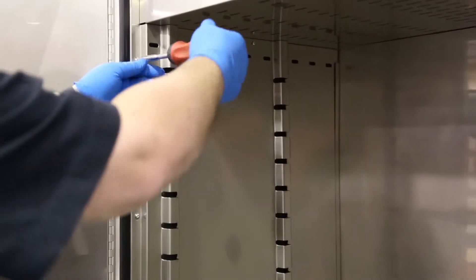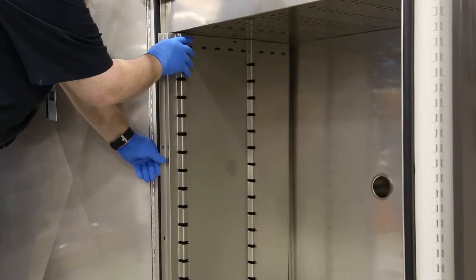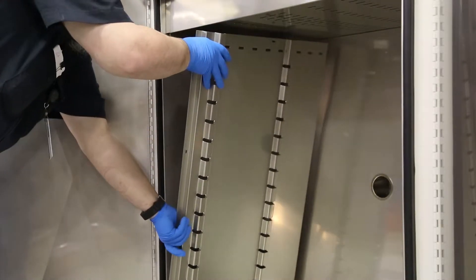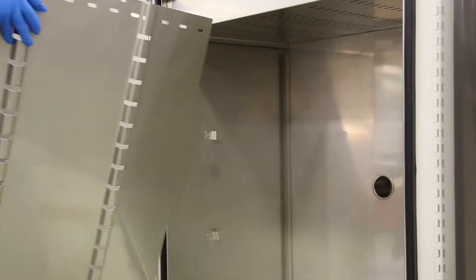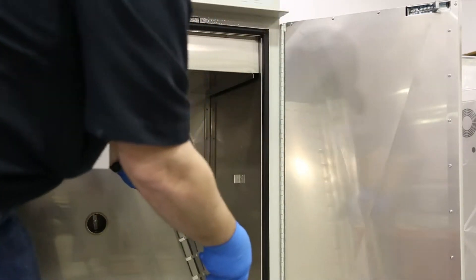Remove the five screws from the side panel with a T15 driver. Once screws are removed, slide the panel forward to release from the back slot and then tip the top in and remove the panel. Repeat the same process for the other side panel.